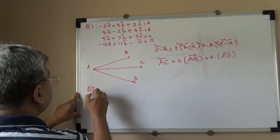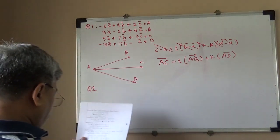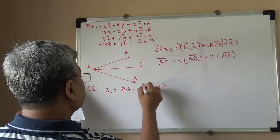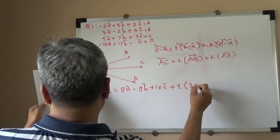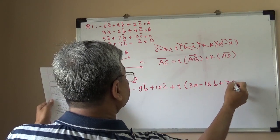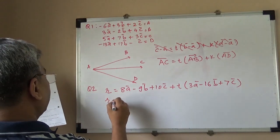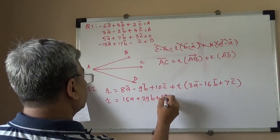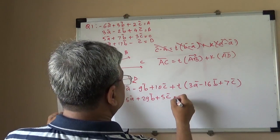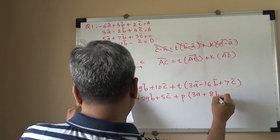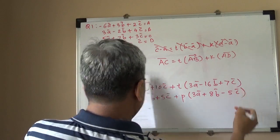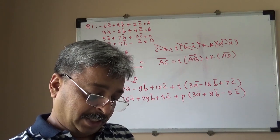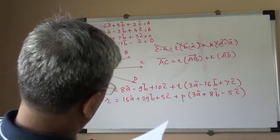Problem number 2: I will give you two lines. Line 1: R = 8A − 9B + 10C + 3(3A − 16B + 7C). Line 2: R = 15A + 29B + 5C + P(3A + 8B − 5C). We are supposed to show that these lines are non-coplanar.